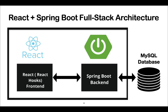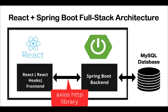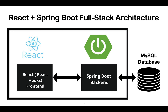Let's look at the React and Spring Boot full stack application architecture. React is a JavaScript library for building user interfaces, and React Hooks allow us to use state and other React features in functional components. Spring Boot is a very popular Java framework for building REST APIs and microservices. The combination of React JS and Spring Boot is very popular for developing full stack applications. Since React has no built-in HTTP library, we use the Axios HTTP library to make HTTP calls from the React application.